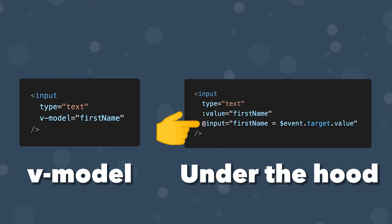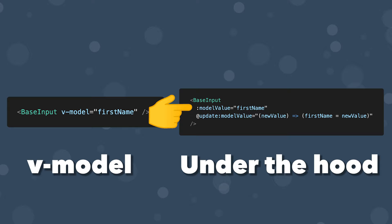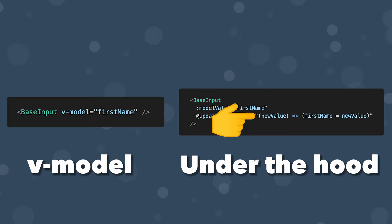When using vModel on a component, things change slightly. Instead, the attribute is now called modelValue and it's listening for a custom event which is emitted from within the component called update:modelValue. Within the emit, we receive the value from our input again via event.target.value, which is then set to our bound modelValue attribute of firstName.